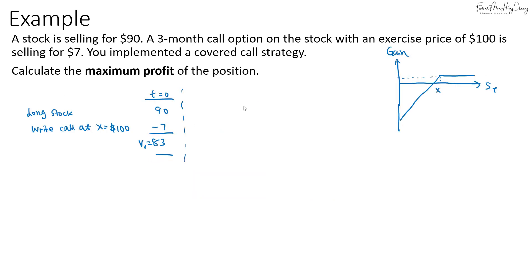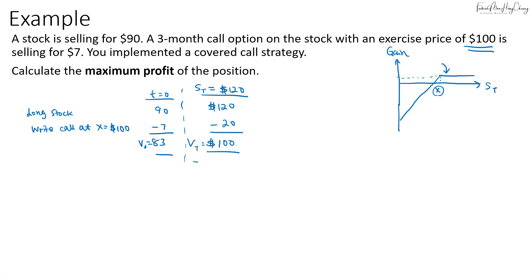To calculate the maximum profit of the covered call, remember that it is achieved when the spot price is greater than the exercise price of $100. Just choose any price higher than $100 — for example, $120. The call can be exercised: $120 minus $100 is $20, but it's negative since it's a liability, so the value goes back to $100. The profit is $100 minus $83, which is $17. You don't need to memorize a formula — just know when maximum profit is achieved.